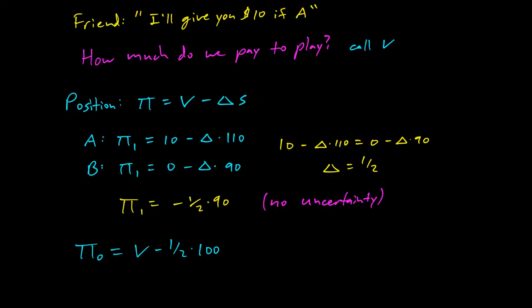And here we also notice that V is just some value we're calculating, and this is no uncertainty, so no uncertainty.